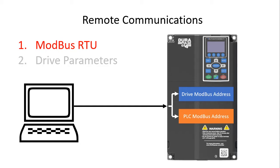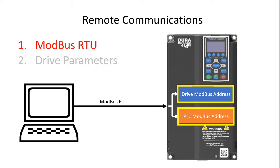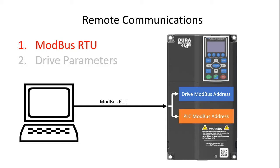But that's the hard way. Because even though you are really talking to the GS4 drive in both cases, now you have two Modbus addresses you have to manage in your controller. And if you accidentally write data to the drive when you meant to write data to the PLC, you can really mess things up.